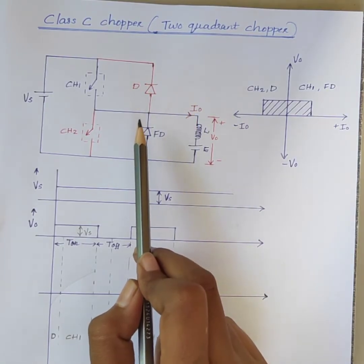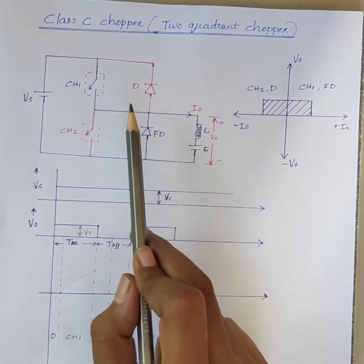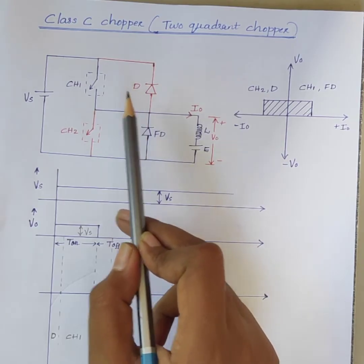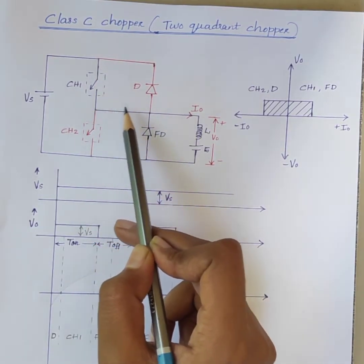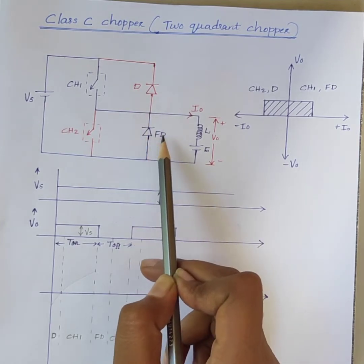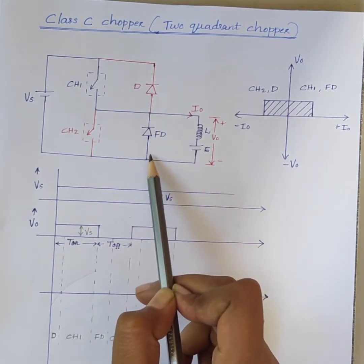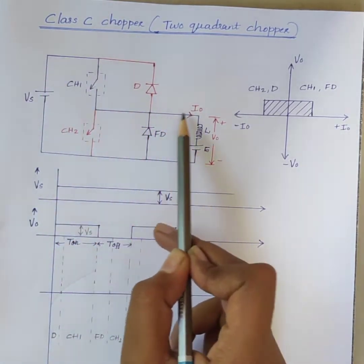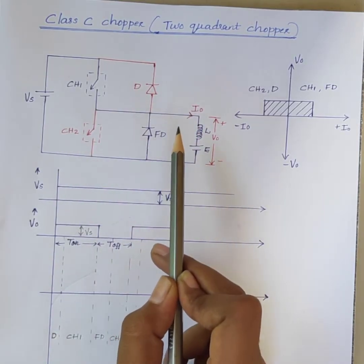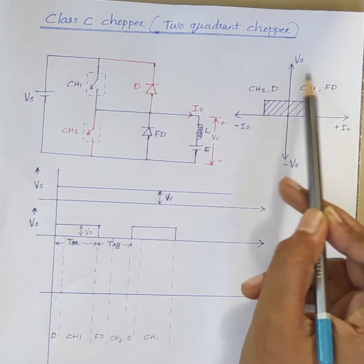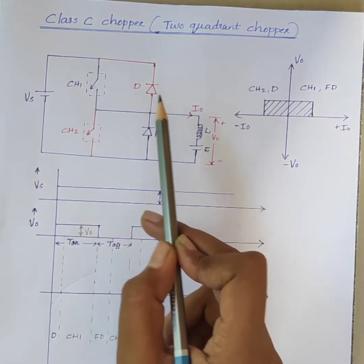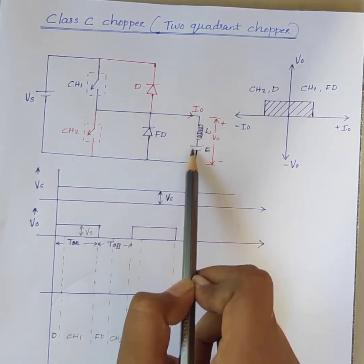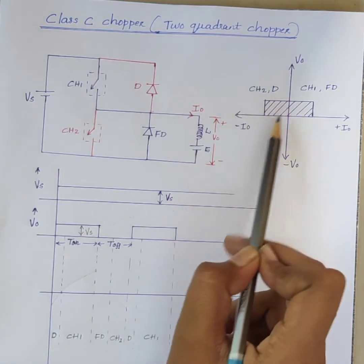The figure shows the circuit diagram of Class C chopper. From the circuit diagram, it is clear that chopper CH1, the freewheeling diode FD, and the load are forming Class A chopper. Whereas diode D, chopper CH2, and the load are forming Class B chopper.